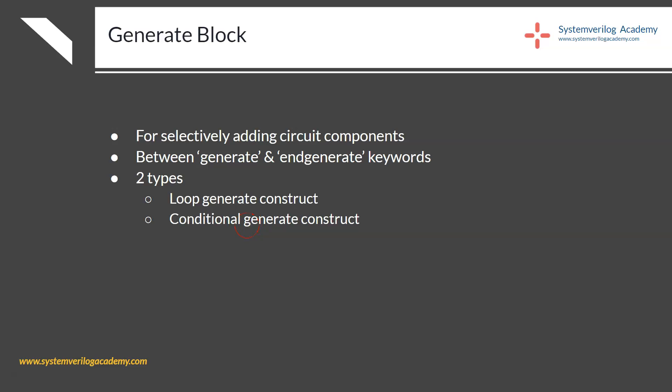For the first scenario, you want to use a looping generate construct to control the number of instantiations of a sub-component based on a parameter. For the second scenario, where you want to selectively instantiate a module based on a parameter, you use the conditional generate construct.